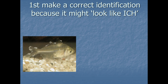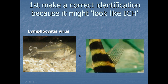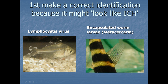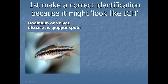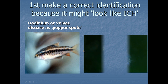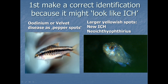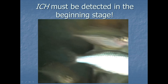First make a correct identification, because sometimes diseases look like ick. Here this chanda with crusty white spots is caused by a virus — lymphocystis. Here a liparinus with little white specks in the dorsal fin, which is caused by encapsulated worm larvae — metacercaria. We also have a peppered appearance on the Titaea barb, which is odinium or velvet disease.